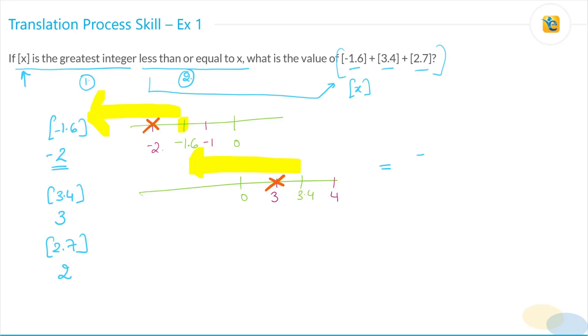So, our answer over here is minus 2 plus 3 plus 2, which is equal to 3.